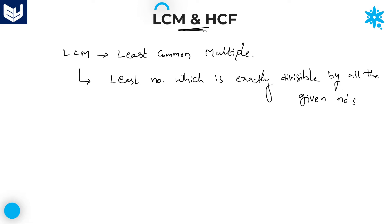Whatever numbers are mentioned in a particular problem — whether two numbers, three numbers, four numbers, five numbers — it doesn't matter. LCM is nothing but the least number which is exactly divisible by all the given numbers. That is called LCM. Now coming to HCF.